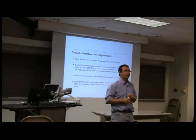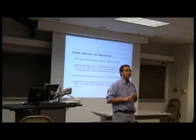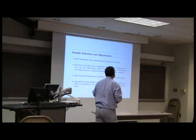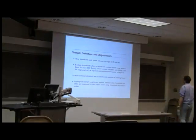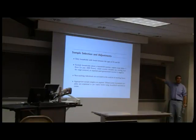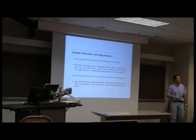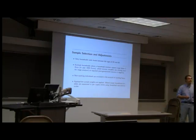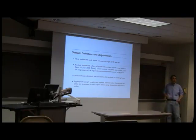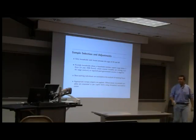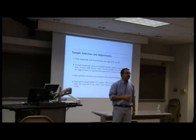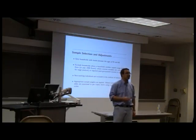Q: How does the distribution of household size change over time? It gets smaller. The dispersion of effective household size, as computed by the OECD equivalence scale, measured by the variance of logs, has gone up quite a bit. And in the East differentially so — the East saw much more substantial changes in household composition than the West after unification.